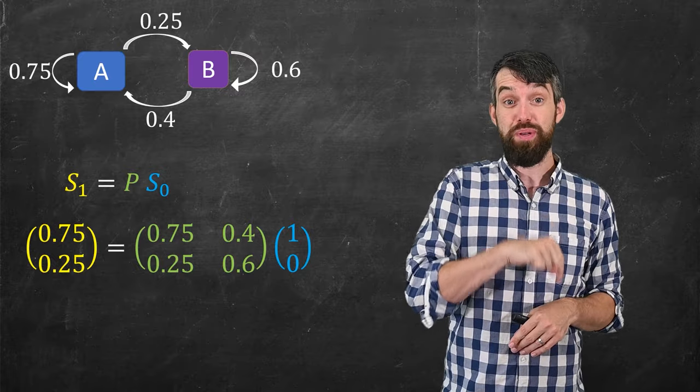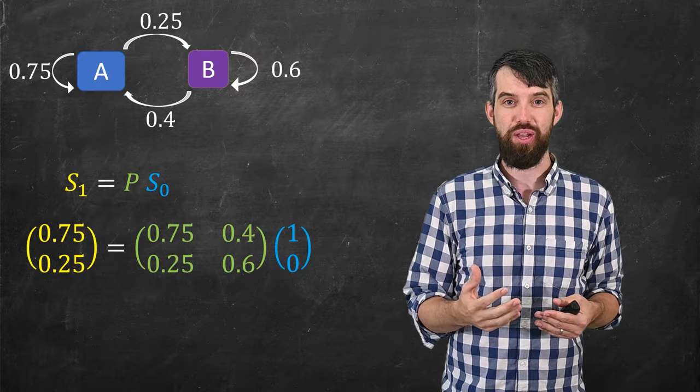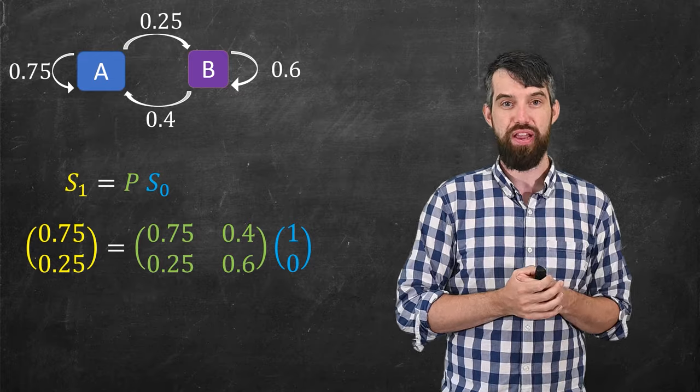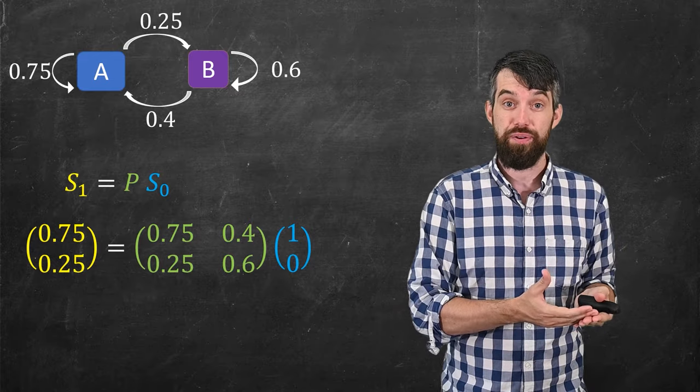Nevertheless, for the purpose of this particular video, all that's worth noting is that when you do this multiplication on the right, you get exactly that vector that we predicted on the left.